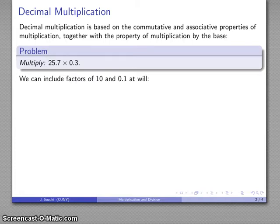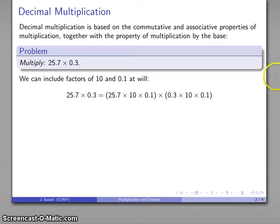And the idea here is that I can include factors of 10 and 0.1 as I want to. If I include both of these, 10 times 0.1, the product 10 and 0.1 is just going to be 1. So I can include as many pairs of 10 and 0.1 as I want to. Well, in this case, I might want to include one pair each.